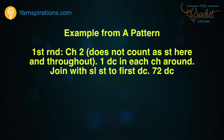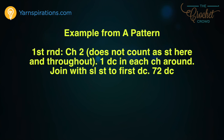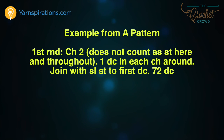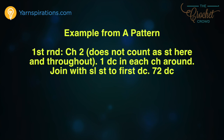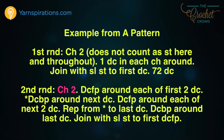Let's begin reading a pattern and take it really slowly to look at a set of instructions. Look for any commas, periods, brackets, and repeats. So: 'First round: chain two does not count as a stitch here and throughout. One double crochet in each chain around, join with a slip stitch to the first double crochet — 72 double crochet.' This instruction tells you that the chain two at the beginning doesn't count as a stitch — and it says 'here and throughout,' meaning every time you see chain two at the beginning of instructions in this pattern you will never count it as a stitch. That indication will not appear again later in the pattern, so in round two when it says chain two you already know it never counts as a stitch.